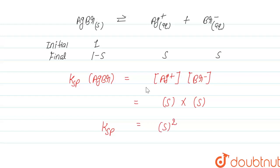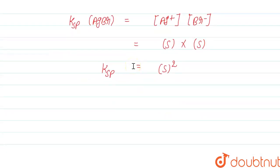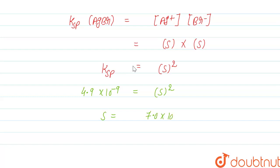We know that the Ksp of AgBr is given as 4.9×10⁻⁹, and that equals s². So from this calculation we get s — the solubility — equals 7.0×10⁻⁵ mole per liter. This is the solubility of AgBr in terms of mole per liter.